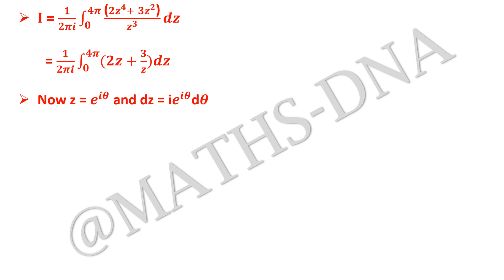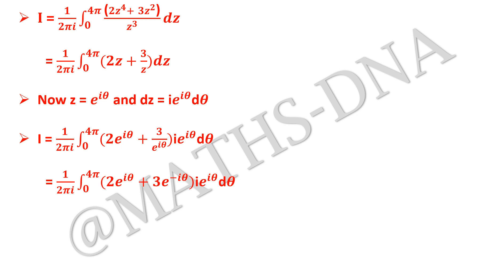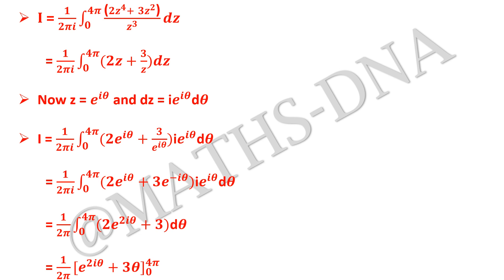Substituting these values, I = (1/2π) ∫₀^(4π) [2e^(iθ) + 3/e^(iθ)] · i·e^(iθ) dθ. Simplifying, the e^(iθ) terms combine so we get (1/2π)·i ∫₀^(4π) [2e^(2iθ) + 3] dθ, which evaluates to (1/2π)·i · [e^(2iθ)/2i + 3θ]₀^(4π)... giving (1/2π)[e^(2iθ)/i + 3θ]₀^(4π), i.e., (1/2π)[e^(8πi)/i + 12π − 1/i − 0].